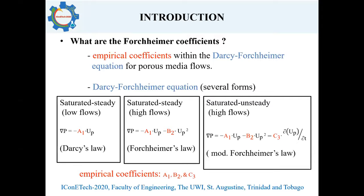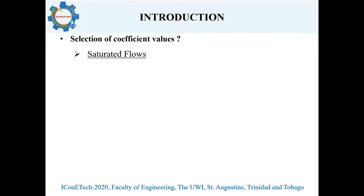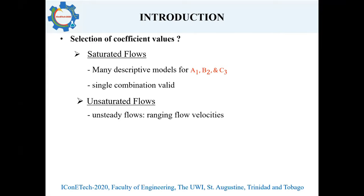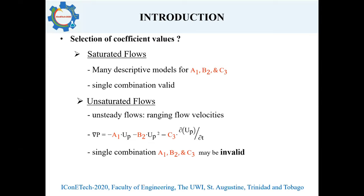For the saturated cases, many researchers have developed respective formulae or descriptive models which give or recommend values for A1, B2, and C3 depending on the media type, and in general a single combination would be valid for that specific flow problem. For unsaturated flows, where the media water content may vary throughout the flow problem, these flows are fundamentally unsteady and velocities may range between high and low. Despite this, the same modified Forchheimer's law remains applicable. However, a single combination of A1, B2, and C3 would not be valid for the unsaturated case, as the nature of these coefficients may vary with the media water content — and it is this area that the research is geared towards.